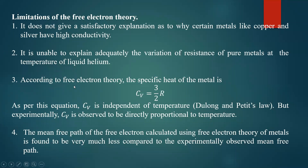According to the free electron theory, the specific heat of metals is given by Cv = 3/2 R. It says that specific heat is constant and the same for all metals, where R is the gas constant. This is called Dulong and Petit's law — a classical law. As per this equation, Cv is independent of temperature and is the same for all metals.